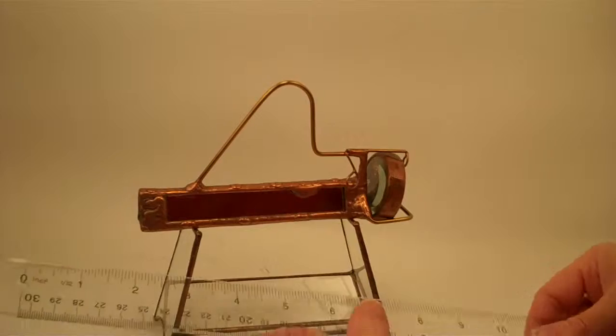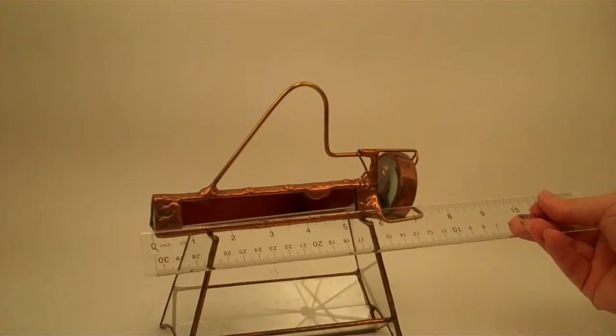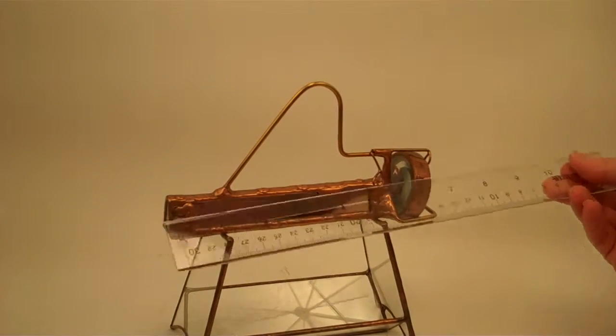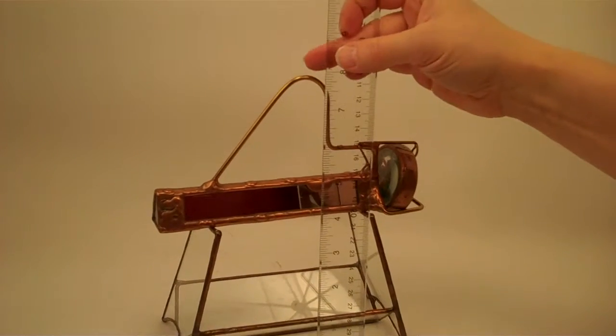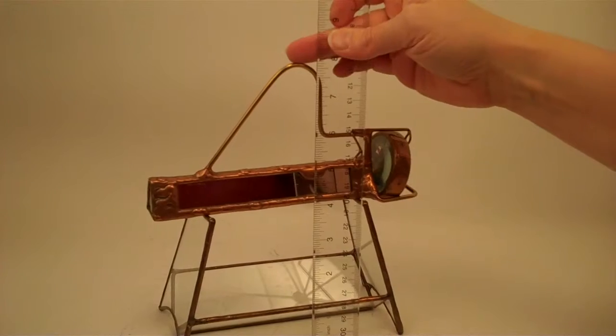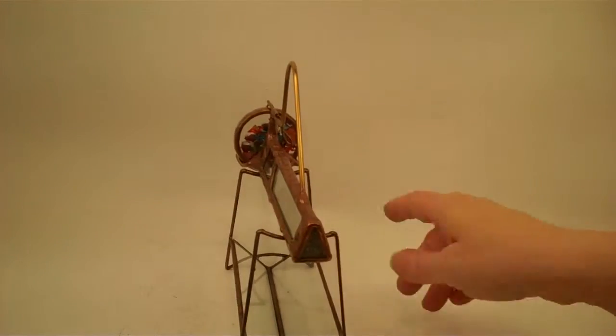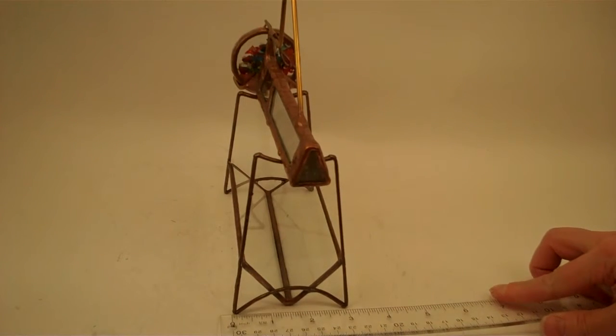And the kaleidoscope itself has an overall length just about seven and a half, seven and three quarters of an inch. A total height of the entire piece approximately eight inches and a width of the base of about three inches.